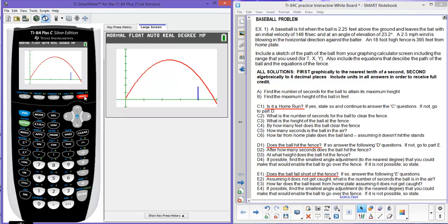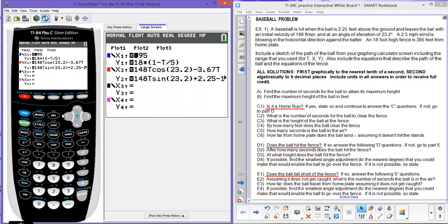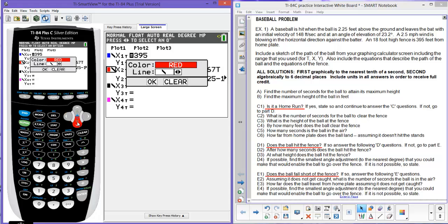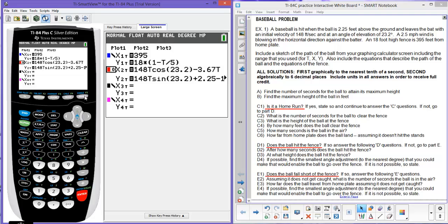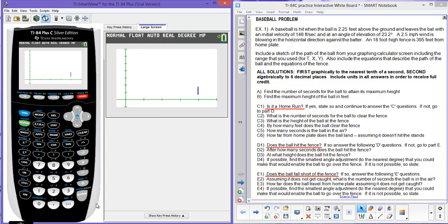But we'd like to see the ball maybe more as a ball, so if I go back to y equals and go down to y2 and over to the left, let's change that style here. The line style could be just a ball. And now we'll go ahead and graph it. There's the fence, and there's the flight of the ball.